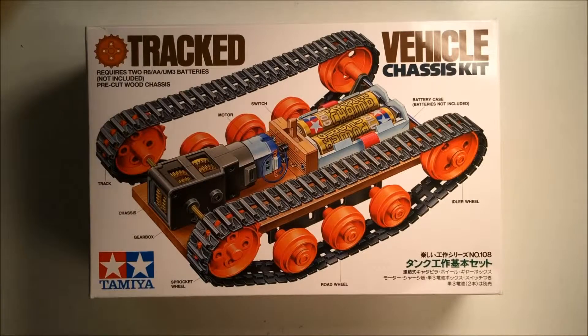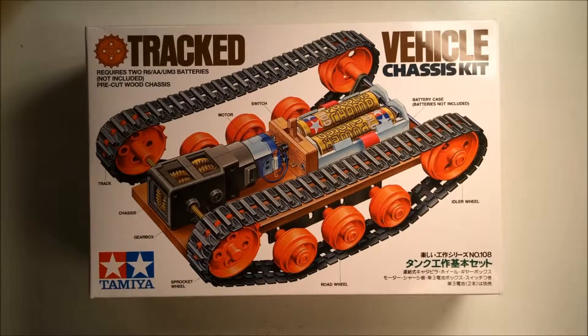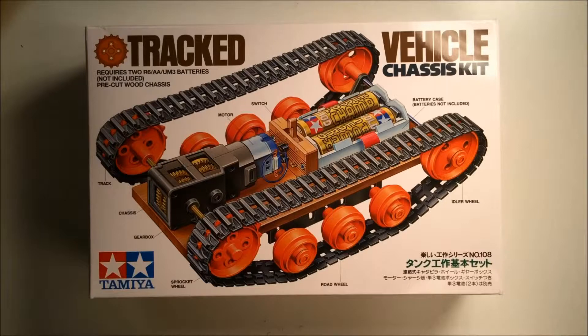So this is the box it came in. It has a motor, the tracks, the chassis, gearbox, sprocket wheel, road wheels, and idler wheel.